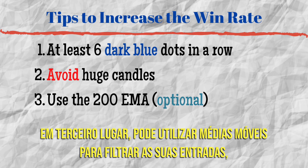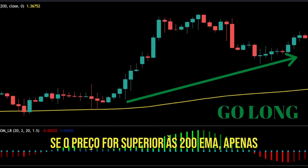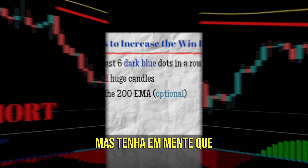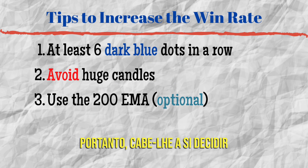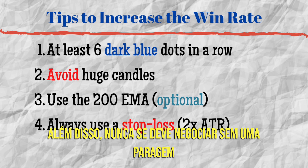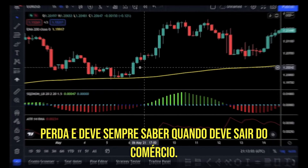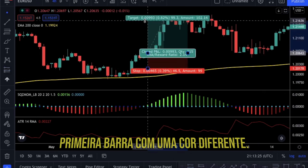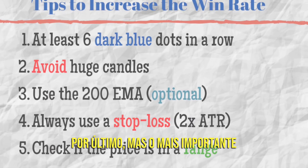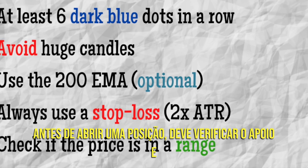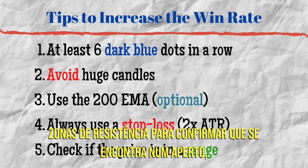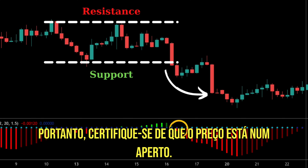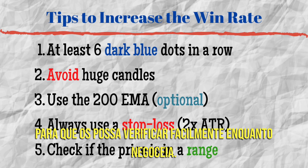Third, you can use moving averages to filter your entries, as we do with nearly all of our strategies. If the price is above the 200 EMA, only look to go long, and only take short entries when the price is below the moving average. Keep in mind that it will also filter some good entries, so it is up to you to decide if you want to use it. In addition, you should never trade without a stop loss, and you should always know when to exit a trade — I will show you how to use the ATR indicator while setting a stop loss. Our exit point will be the first bar with a different color. Last, and most importantly, check the price action. Before opening a position, check the support and resistance zones to confirm that you are in a squeeze, because the Squeeze Momentum Indicator is meant to be used when the price is squeezed in a range.